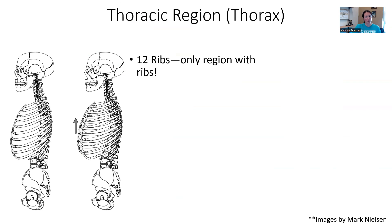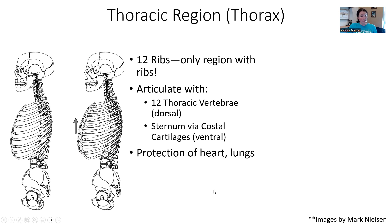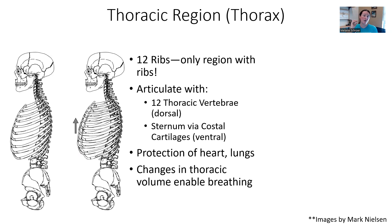A couple more muscles with which you should be familiar. These muscles are in the thoracic region — only in the region with the ribs. Remember there are 12 ribs and 12 thoracic vertebrae, it's the only region with ribs. Each thoracic vertebra articulates with a pair of ribs, and of course we have the sternum and costal cartilages on the ventral side. The function of your rib cage is to protect the heart and to protect the lungs, and also to change volume, which enables breathing. If you can't move your rib cage, it is nearly impossible to breathe. By changing the position of your ribs, we change the volume and therefore can inhale and exhale.